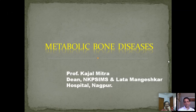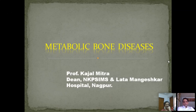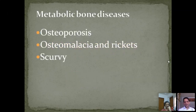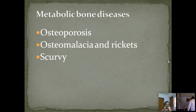It becomes a very long topic for discussion and our attention span is usually very less — more so in a webinar where nobody can see what you are doing. Talking of metabolic bone diseases, we will consider only three conditions: osteoporosis, osteomalacia and rickets, and scurvy. Osteomalacia and rickets are manifestations of vitamin D deficiency in children and adults respectively, scurvy is vitamin C deficiency, and osteoporosis we will discuss in detail.